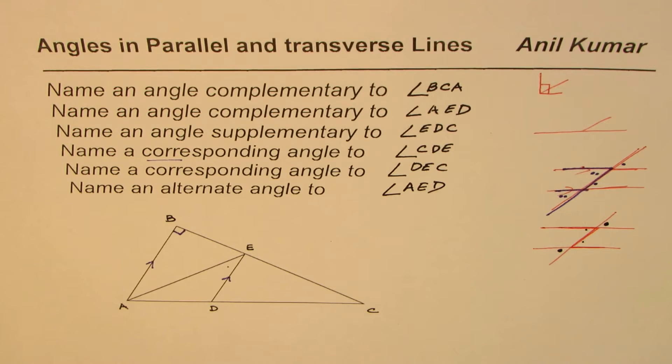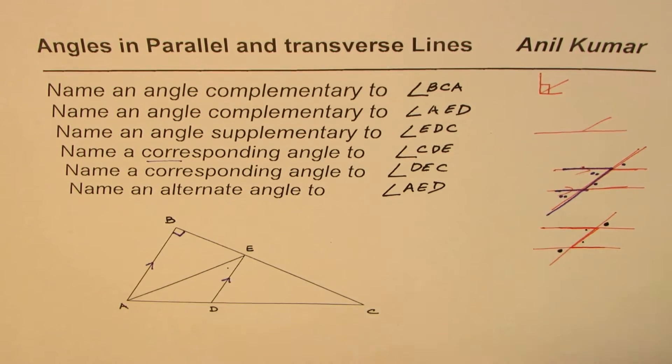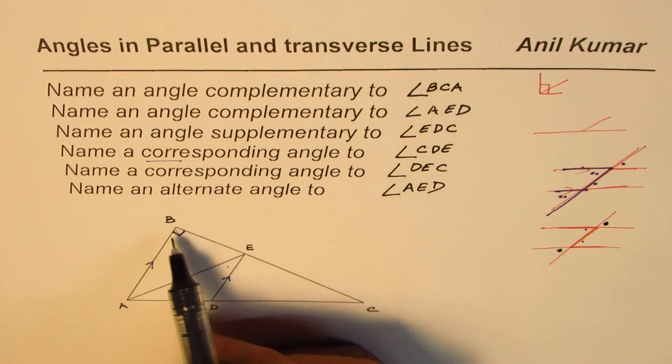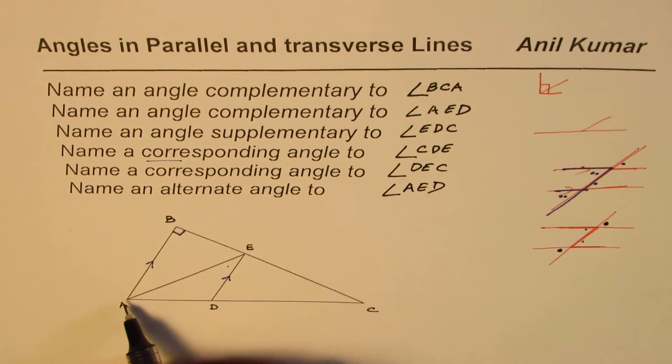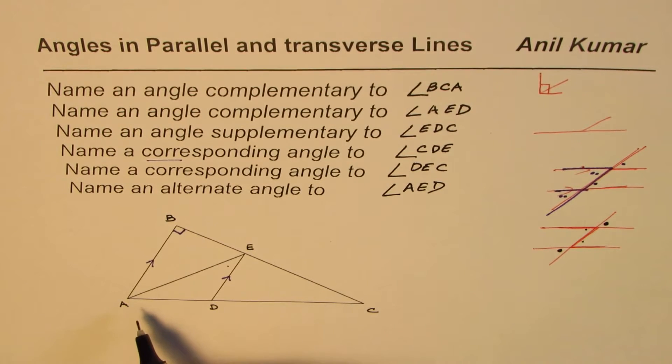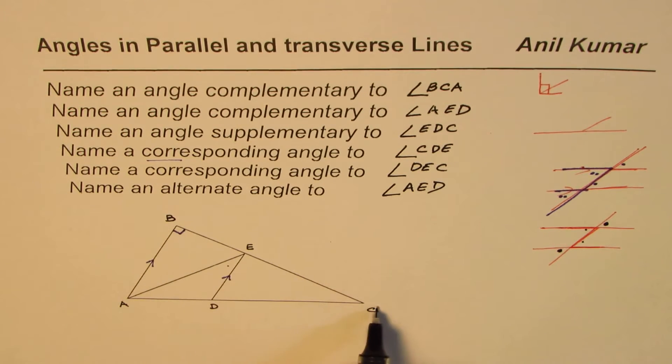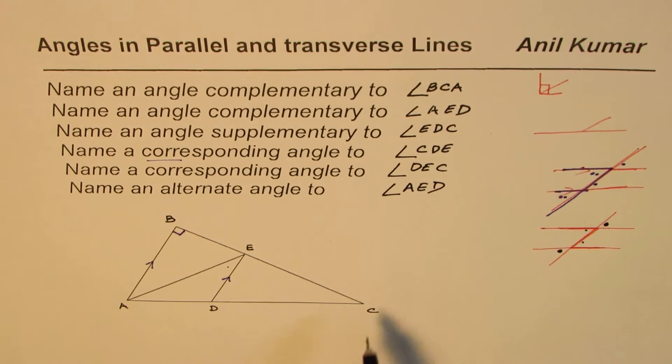You can now pause the video, answer the question and look into my suggestions. Let's begin by finding complementary angle to angle BCA. BCA, now that's a very tricky question. If you see the triangle ABC is 90 degrees correct. If triangle ABC is 90 degrees, in that case sum of angle A and C should also be 90 because total angle is 180.